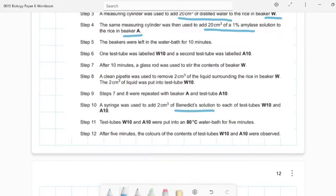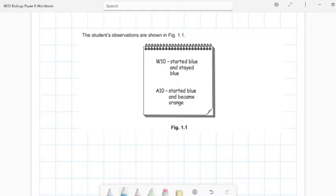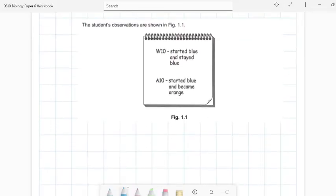And then you do the Benedict test here. And you put it on a water bath. You're trying to see which one has what color. So after five minutes, the color of the contents are observed. So W started blue because Benedict is blue and it stayed blue. A10 on the other hand started blue and became orange. So they're telling you, draw a table for this.